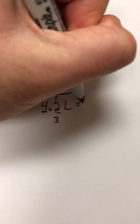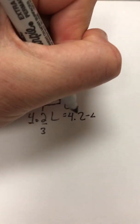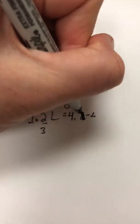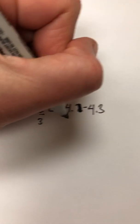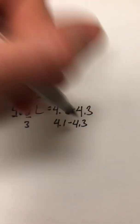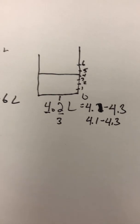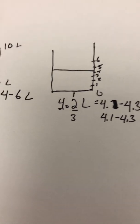Really this is a range between 4.1 to 4.3. So 4.1 to 4.3 is the actual number when you're talking about 4.2.